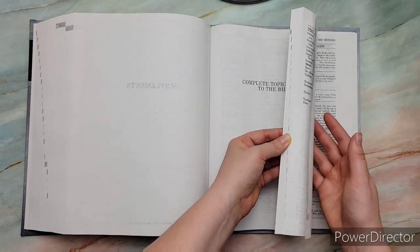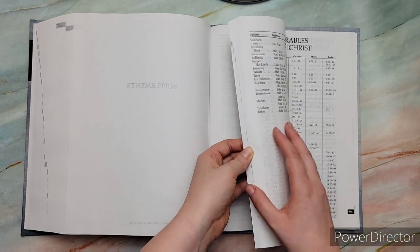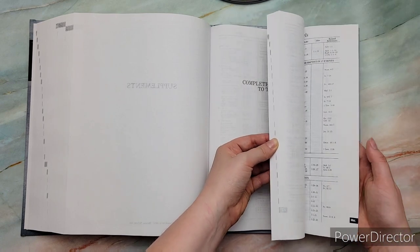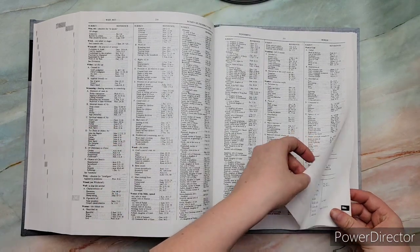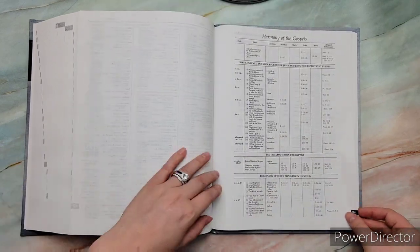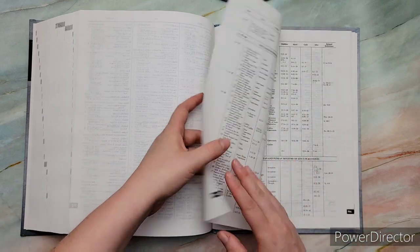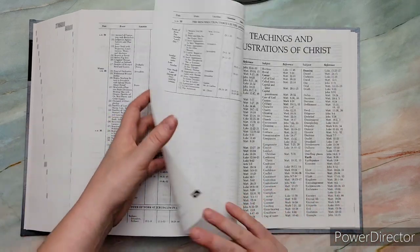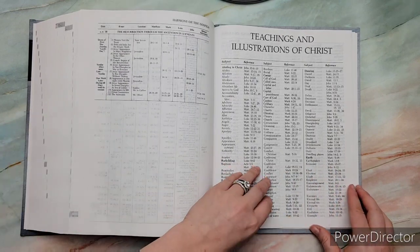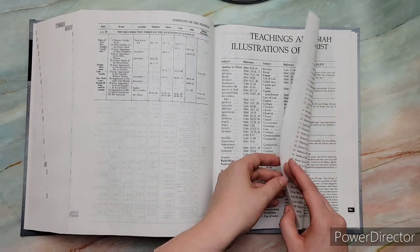You have the Harmony of the Gospels. So that's really cool. You have teachings and illustrations of Christ. So that's cool. Parables of Jesus Christ. Prophecies and miracles of Jesus. So you can see the prophecy in the old and fulfilled in the new. So that's really cool. I think that'd be a really cool study to do.